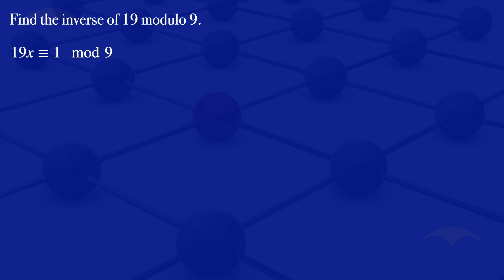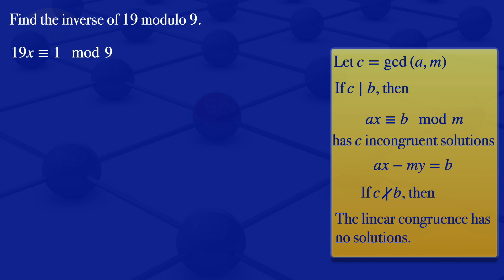This is just a linear congruence and to solve linear congruences, if we have c being the greatest common divisor of a and m, if c divides b, then the linear congruence ax congruent to b modulo m has c incongruent solutions.